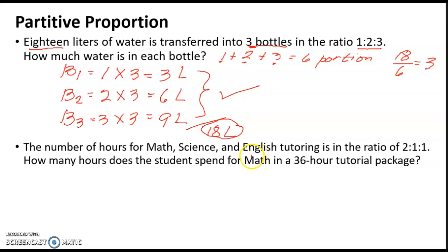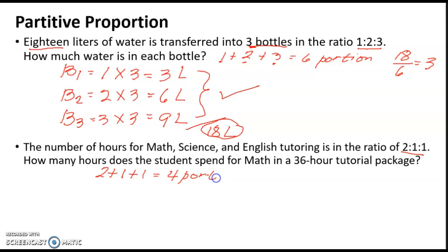How many hours does the student spend for math in a 36-hour tutorial package? The given ratio 2:1:1 tells us the total portions: 2 plus 1 plus 1 equals 4 portions. So the 36 hours is divided into 4 portions: 36 divided by 4 equals 9. One portion equals 9 hours.